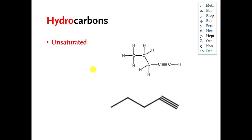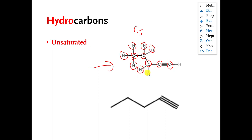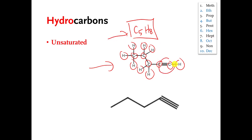Here's another example of a molecule that is an unsaturated hydrocarbon. This is also C5 and has eight hydrogens, so this molecule's formula is C5H8. This is also unsaturated because it has a carbon-carbon triple bond, and if you remember, that is called an alkyne functional group.